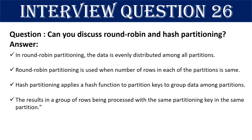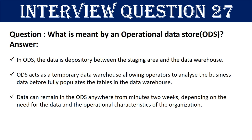Question 26: Can you discuss round robin and hash partitioning in more detail? In round robin partitioning, the data is evenly distributed among all partitions — it is appropriate when the number of rows in each partition is the same. Hash partitioning applies a hash function to partition keys to group data among the partitions, resulting in rows with the same partitioning key being processed in the same partition.